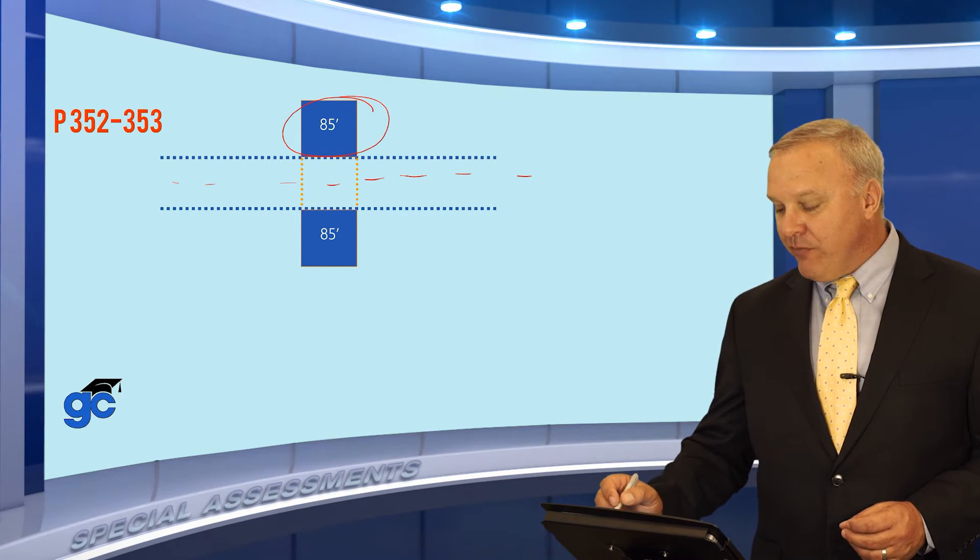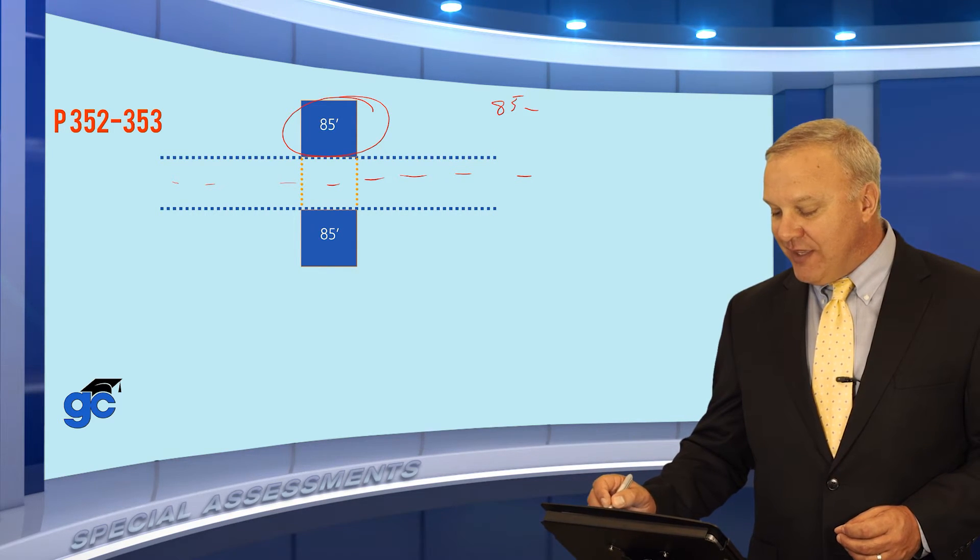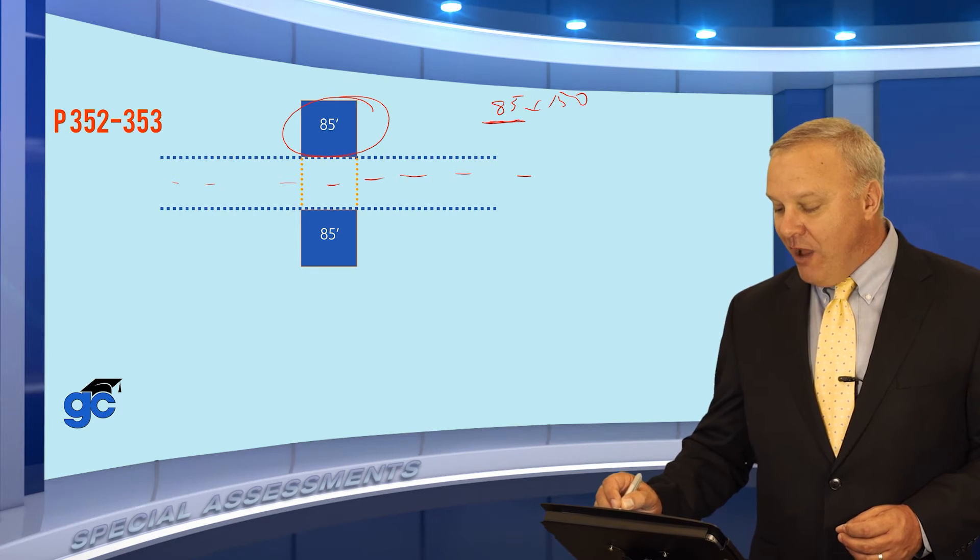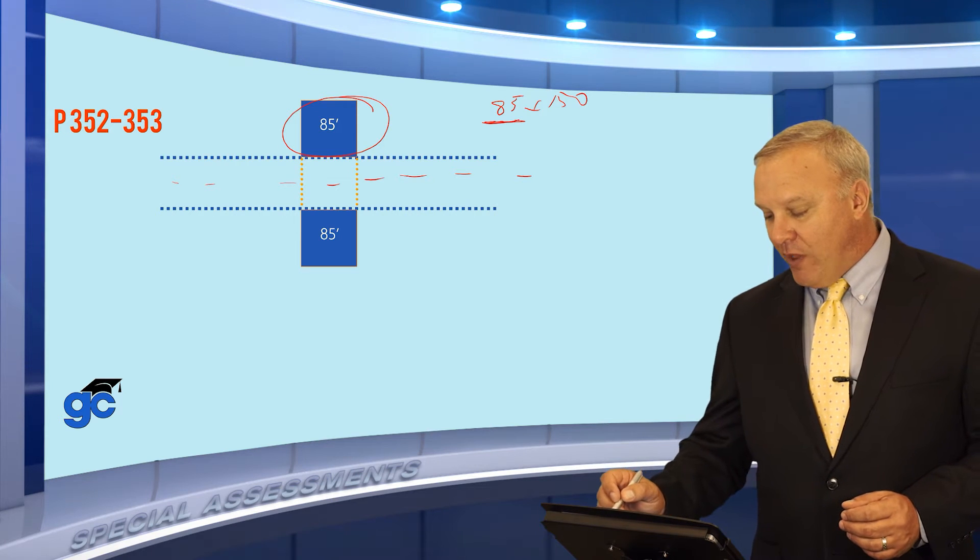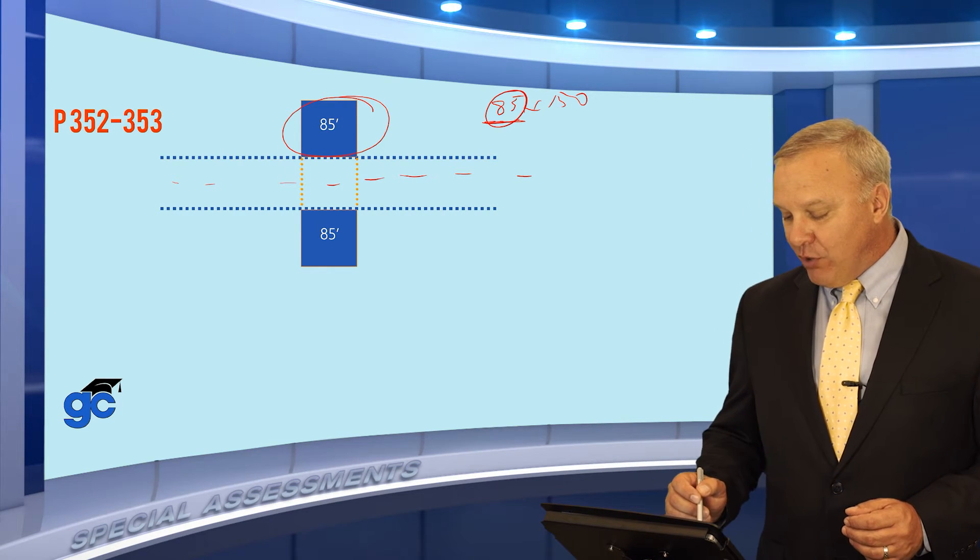if you see property measurements like this, 85 by 150, this front number is always the width of your property or the distance across the street. So that's the one you're going to use in this type of question.